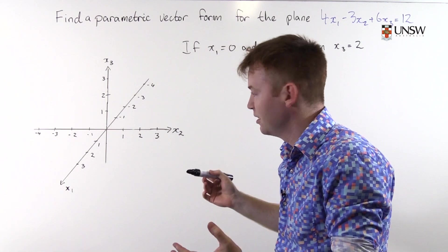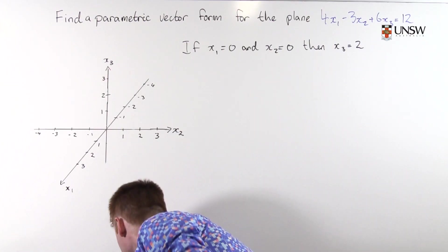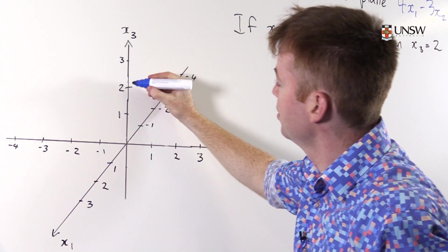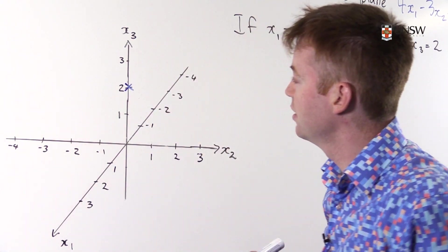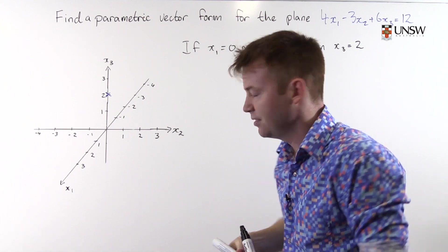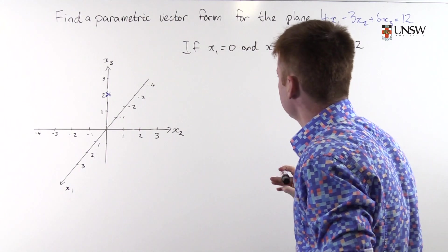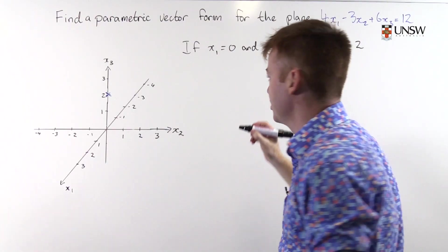So whatever this mysterious plane looks like we know that this point, we'll do it in blue, we know that this point here is on it. Let's carry on and find another point on this plane.